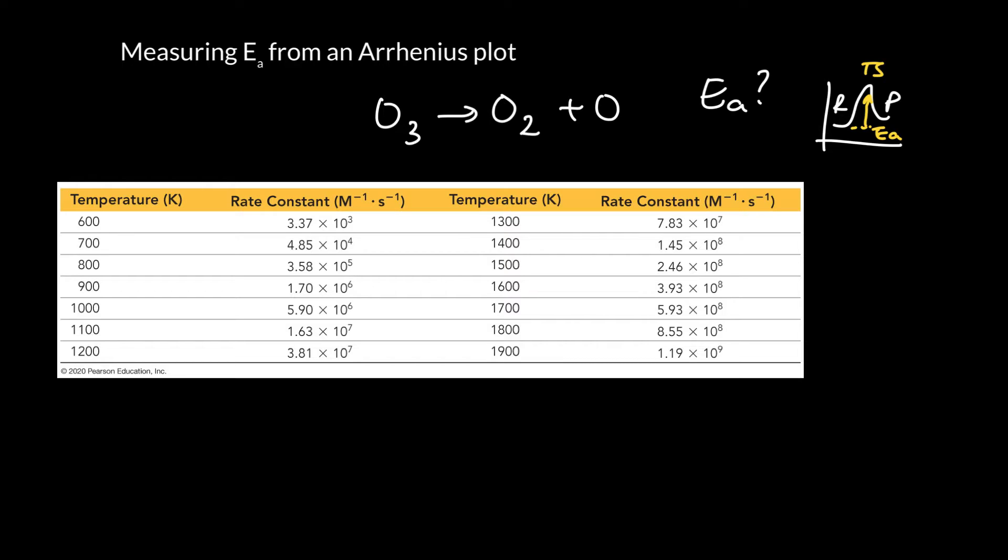And so we would do an Arrhenius plot with this to find the activation energy. We would take the rate constants, and we would take the natural log and plot them on the y-axis. And the same thing for the temperature, we would invert it and plot it on the x-axis. So to make the Arrhenius plot for this data here, we'd essentially take 600 Kelvin and 3.37 times 10 to the 3, the rate constant, we would invert the temperature here. So we take 1 over the T, and over here we take the natural log of this value, and we'd get a data point. We'd plot it on the graph.